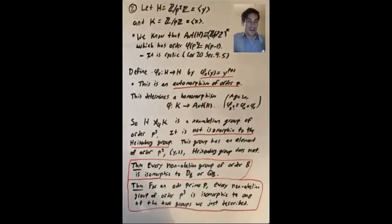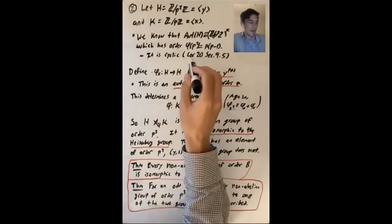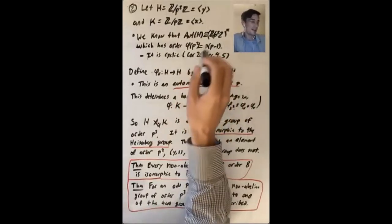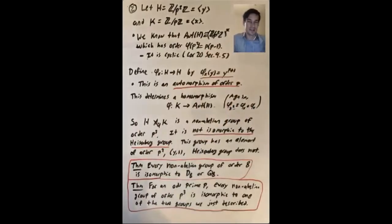We just need that its order is divisible by p. So by Cauchy's theorem, that means that there is an automorphism of order p. So for future reference, we'll come back to this in 206b and we'll see that this group actually is cyclic.